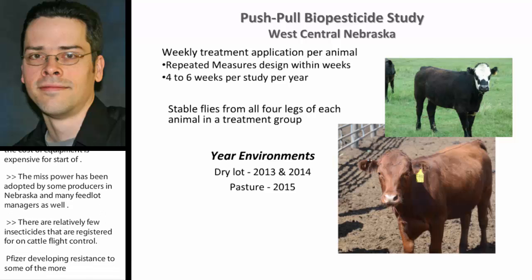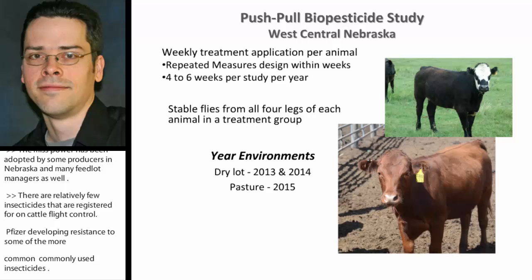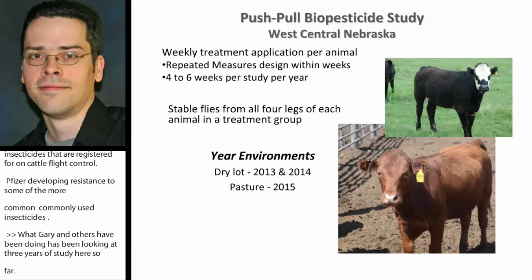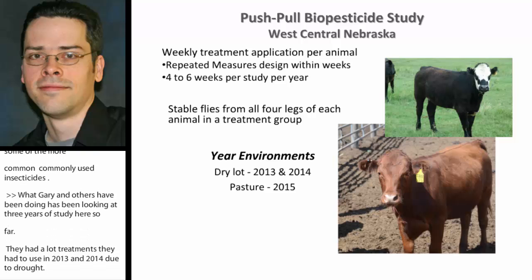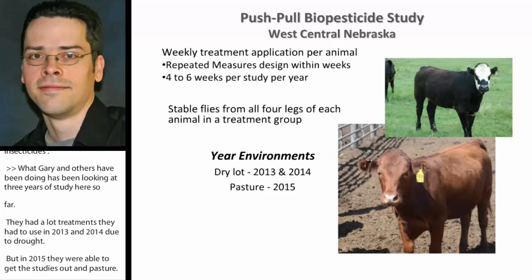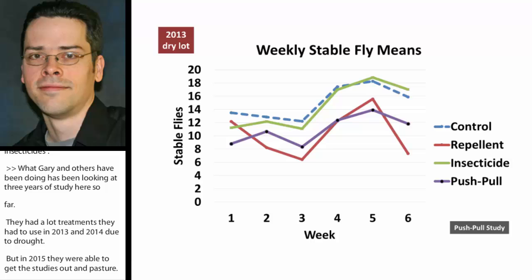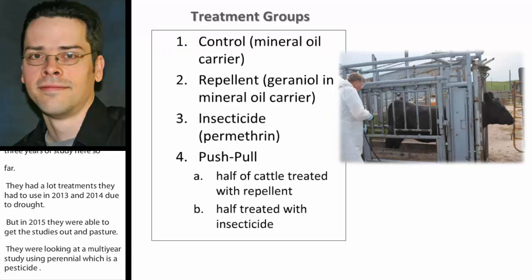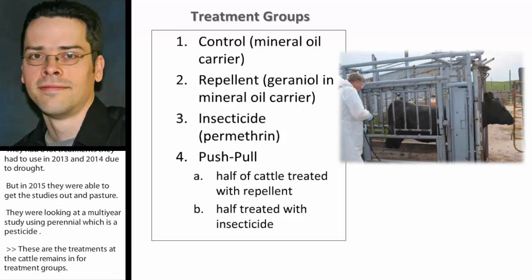Gary and collaborators conducted three years of study. They had dry lot treatments in 2013 and 2014 due to drought, but in 2015 they were able to get the studies out on pasture. They used a multi-year study examining geraniol, a repellent biopesticide, to manage stable flies on Nebraska-pastured cattle. Individual animals were randomized into four treatment groups and treated weekly by moving them through a holding chute, then released back into their treatment groups.